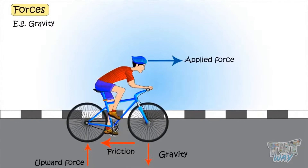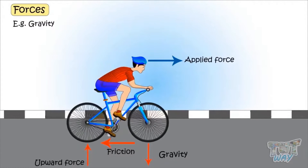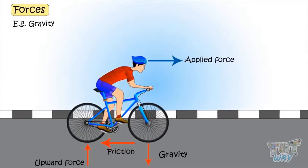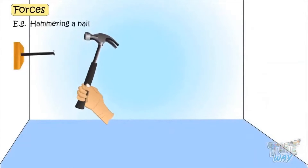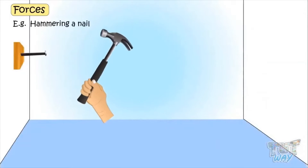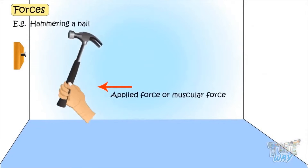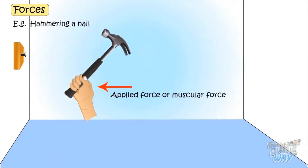Now let's see another example — forces acting while hammering a nail. The applied force, or muscular force, is pushing the nail into the wall. And friction is opposing the movement.